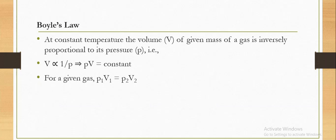the volume V of a given mass of a gas is inversely proportional to its pressure P. In mathematical terms, V is directly proportional to 1/P. This implies PV equals a constant. For a given gas, P₁V₁ equals P₂V₂. This is Boyle's law.